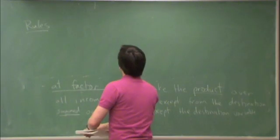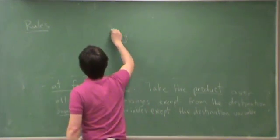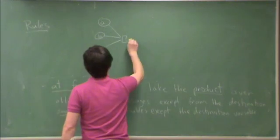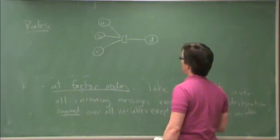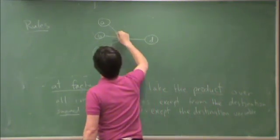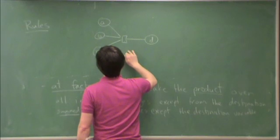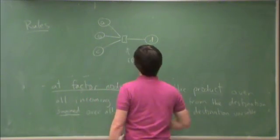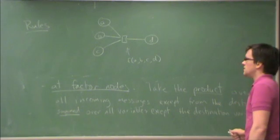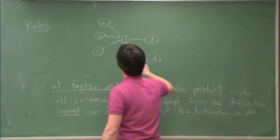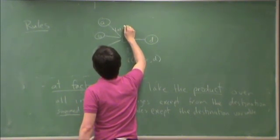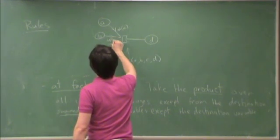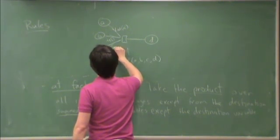For instance, let's say we have a factor of variables a, b, c, and d. We will have messages incoming from a, b, and c.